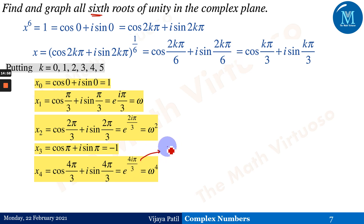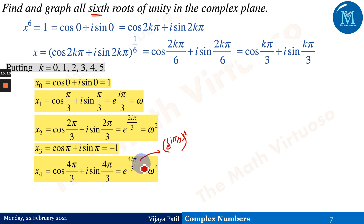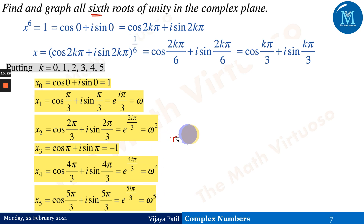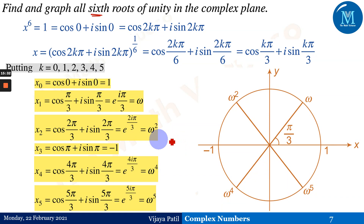For k = 4: x₄ = cos(4π/3) + i sin(4π/3) = e^(i4π/3) = (e^(iπ/3))⁴ = ω⁴. For k = 5: x₅ = cos(5π/3) + i sin(5π/3) = e^(i5π/3) = ω⁵.